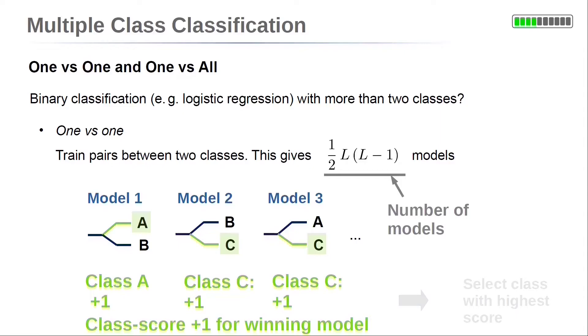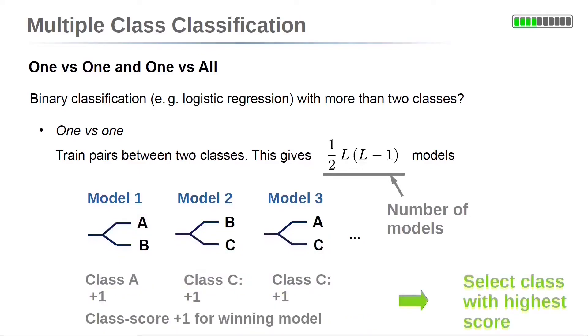For classification, every model gives a plus one for the one of the two classes which has a higher probability. Finally, the model with the highest score gives the estimation for the class.